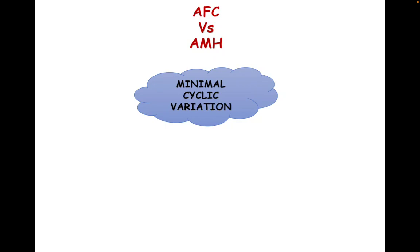So the antral follicles do not remain antral follicles anymore, and that's why we cannot do antral follicle count at any time during the cycle. But AMH is something we can do anytime during the cycle, because it is released by only antral follicles and pre-antral follicles. Once those antral follicles become recruited, AMH is no longer released from them.